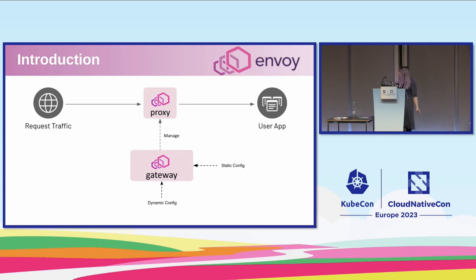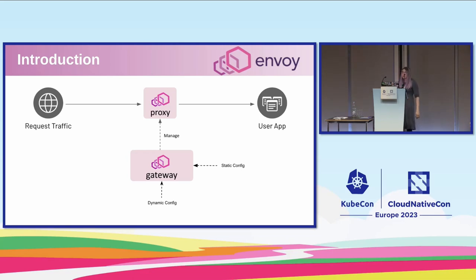When you've got it running, you basically have an instance of Envoy Gateway, and it watches static config and dynamic config. It will then create and manage a fleet of Envoy proxies, and the Envoy proxy is of course what actually handles the different requests coming in and getting them to your applications.